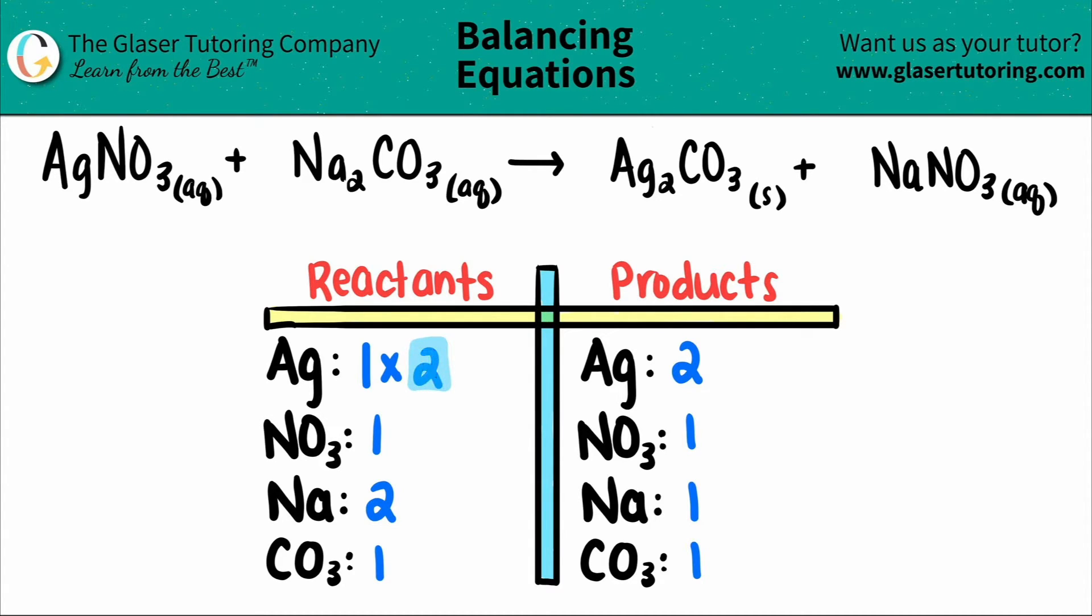And whatever number that you stated is the coefficient that you put in front of the element that you're trying to balance. So I'm going to put a two here. But you got to be fair. Whatever number that you put as a coefficient, you have to distribute to all of the elements and the polyatomics of that compound.